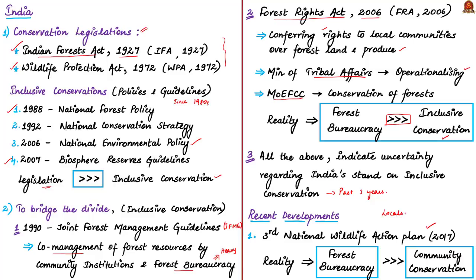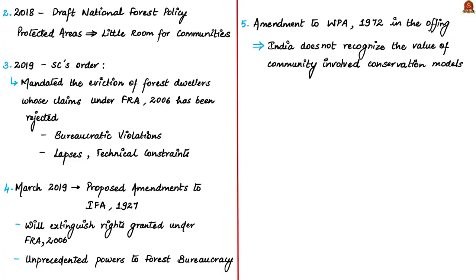Where communities are to be involved, this action plan stresses on conservation within a bureaucracy-controlled format. Next, the author mentions the 2018 draft National Forest Policy, which has emphasized the protected area model of conservation. This model leaves little room for communities to involve in conservation activities.